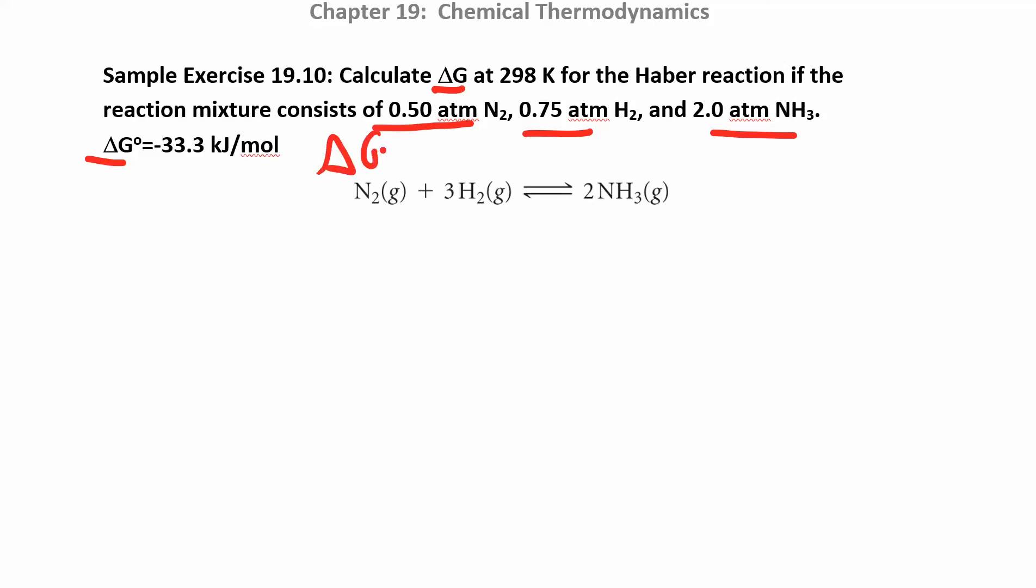Delta G is equal to delta G naught, which they give you, plus R times T times the ln of Q. So we always know R. They give us temperature here. They give us delta G naught. We have R. We have T. We need to find the natural log of Q. So that's the first thing we want to do. Set up our Q expression.